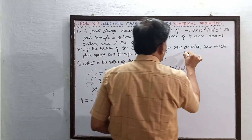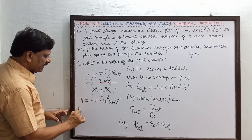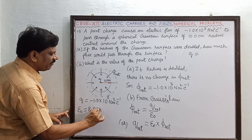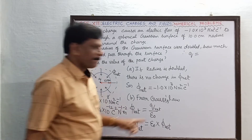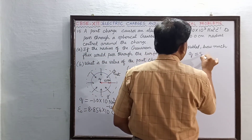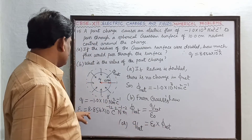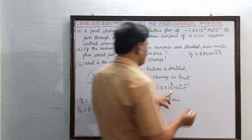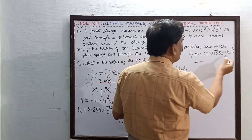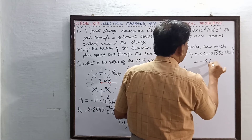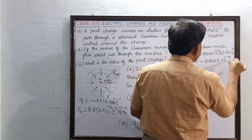Therefore, the charge Q is the product of epsilon naught and phi net. The value of epsilon naught is 8.854 into 10 to the power of minus 12 Coulomb square per Newton meter square. Substituting: Q equals 8.854 into 10 power minus 12 multiplied by minus 1 into 10 power 3, giving minus 8.854 into 10 power minus 9 Coulomb.